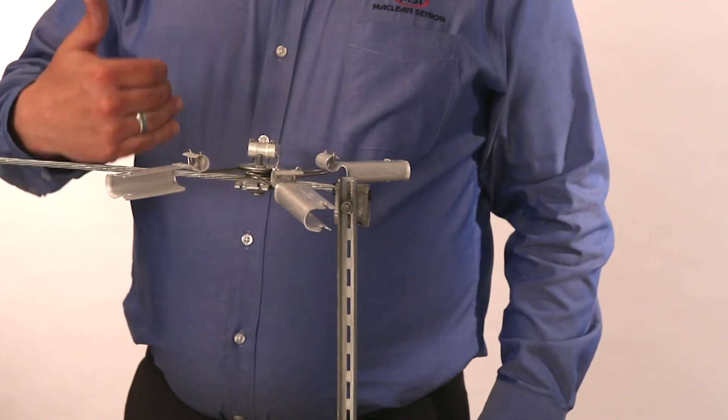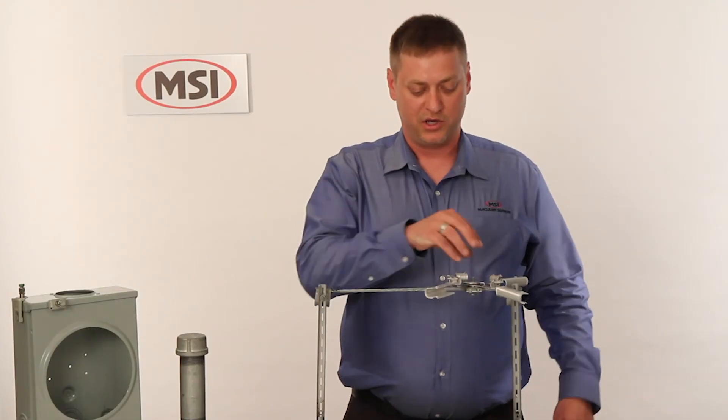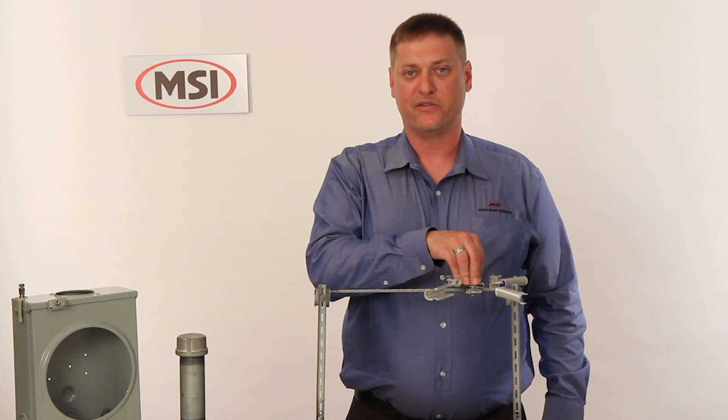So instead of having multiple Q-span clamps to go bi-directional, you have one attachment up at the tap keeping everything nice and neat.